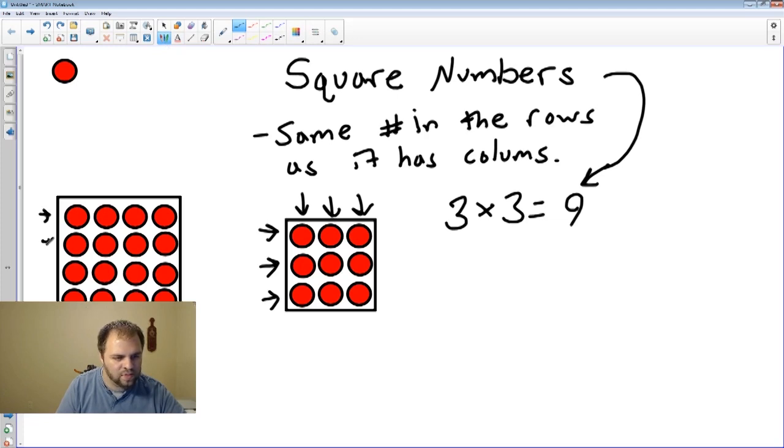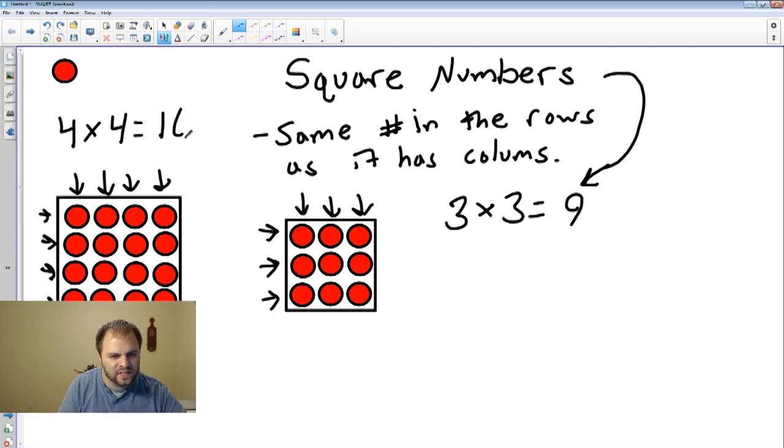One, two, three, four rows with new columns: one, two, three, four. A four by four array, which we should know as sixteen. So so far we have found two square numbers: nine and sixteen.